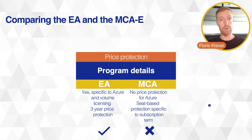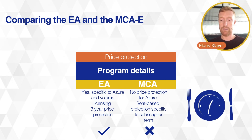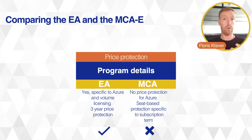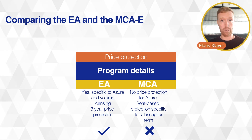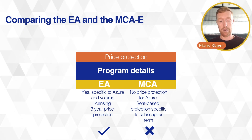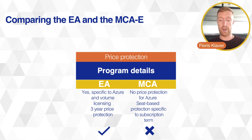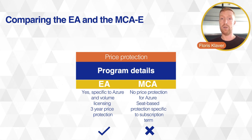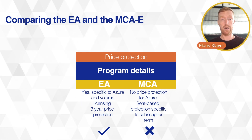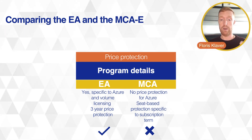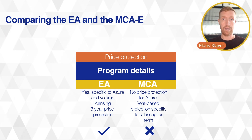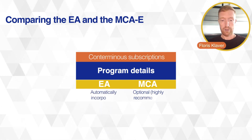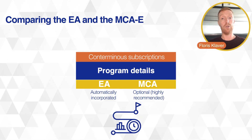For user subscription licenses or seat-based products, you can lock prices in for a term. Throughout that term the prices will be set, and even for monthly subscriptions you would be able to lock those prices in for a term and add licenses against that price point for that period of time.